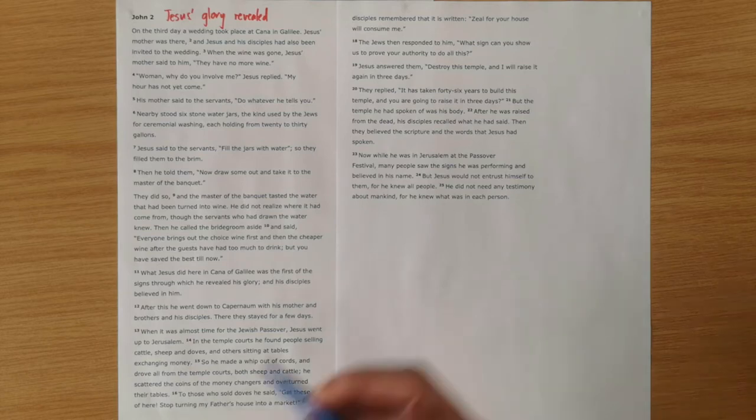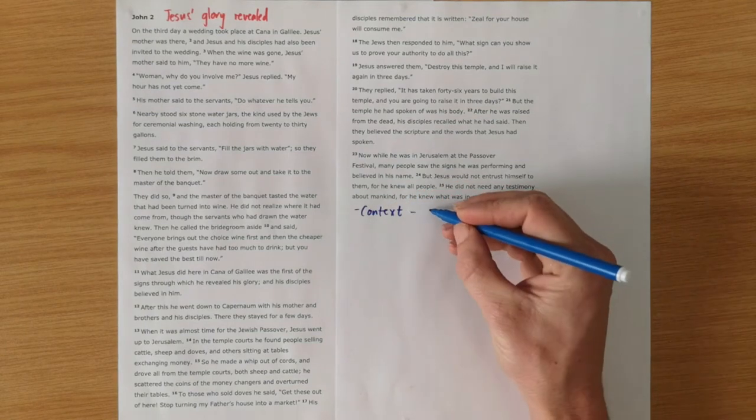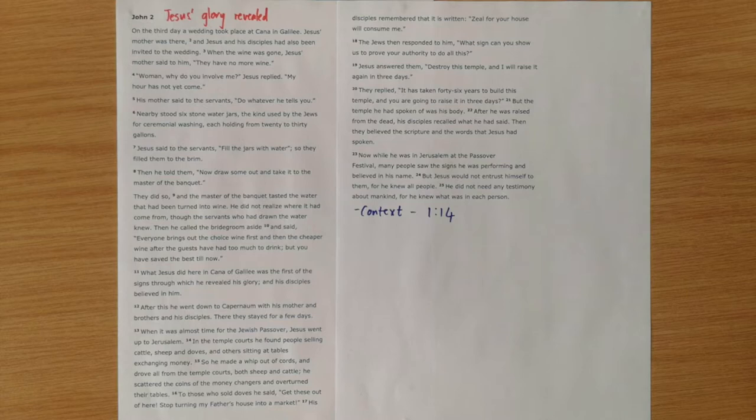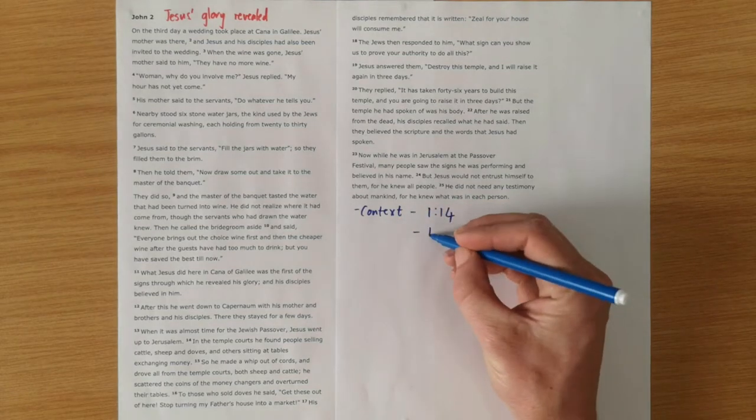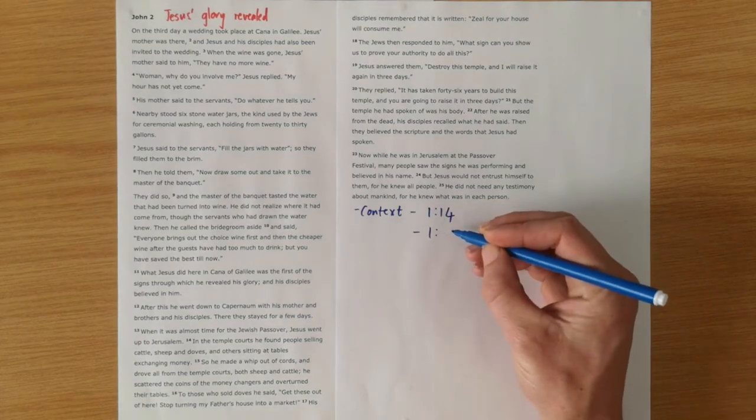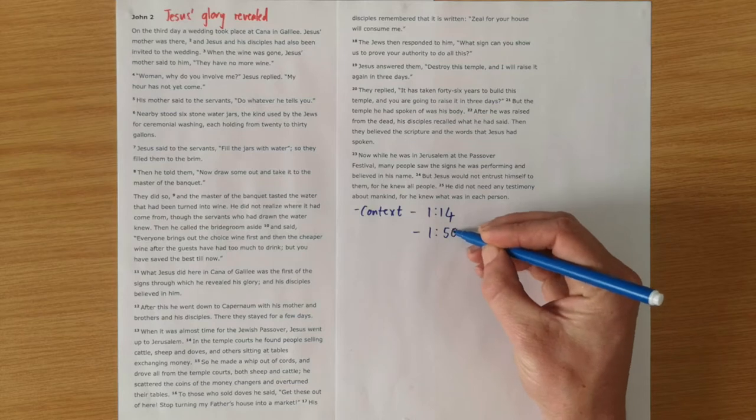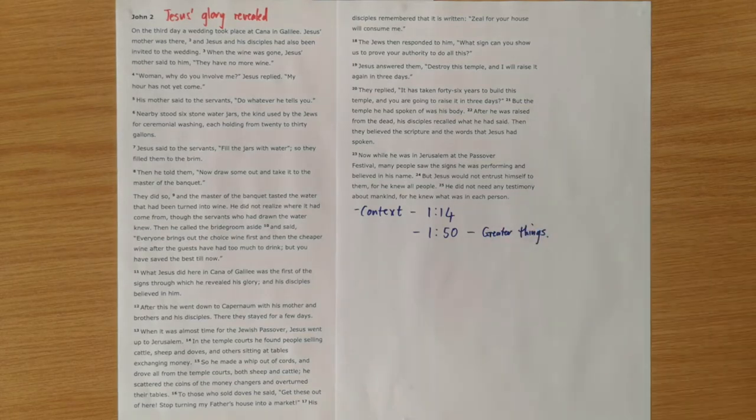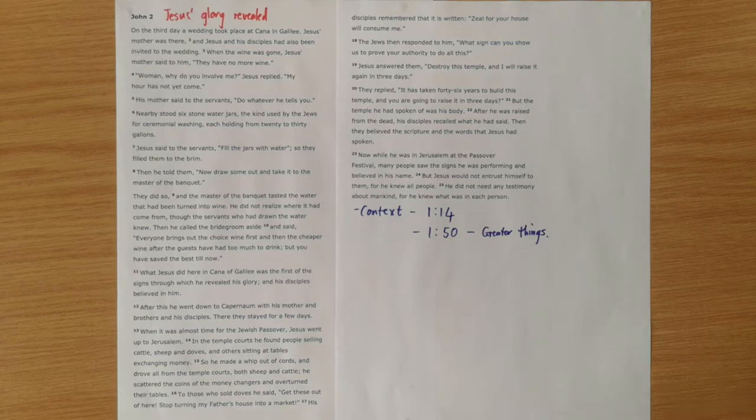Some helpful context for this section: chapter 1, verse 14, where we're told that the Word became flesh and dwelt among us. We have seen His glory. Glory is a key theme here. And then also the context of 1, verse 50, where Jesus is talking to Nathanael and He says to him, you will see greater things.